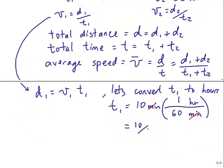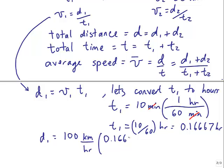That's 1 hour over 60 minutes, so we end up with 0.16667 hours. So multiplying 100 kilometers times that many hours is 16.667 kilometers.